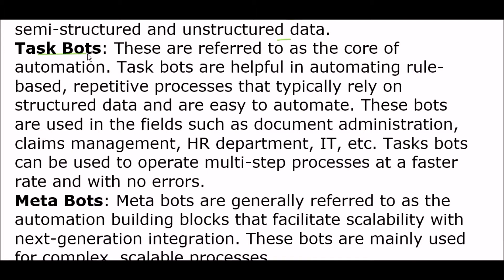The next bot type is Task Bots — referred to as the core of automation. Task Bots are helpful in automating rule-based repetitive processes that typically rely on structured data and are easy to automate. These bots are used in fields such as document administration, claim management, HR departments, and IT sectors. Task Bots can be used to operate multi-step processes at a faster rate and with no errors.